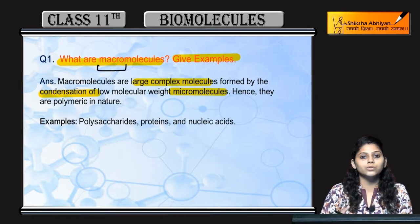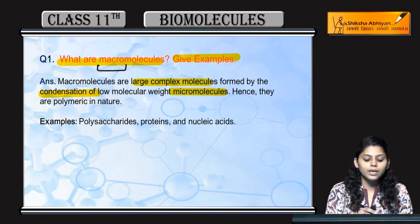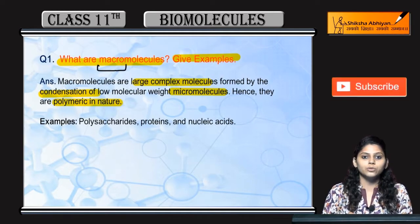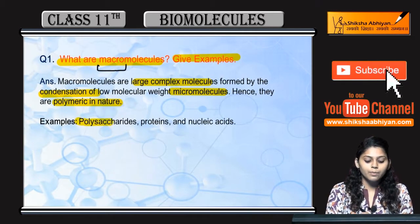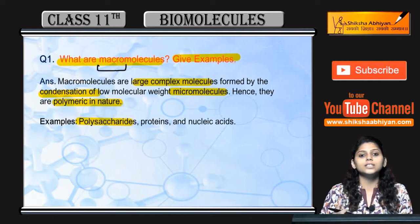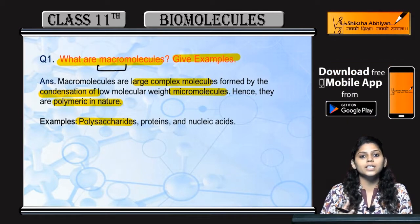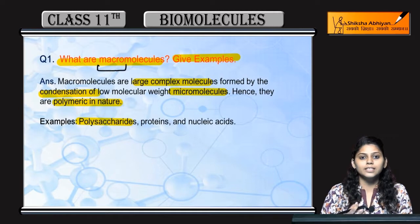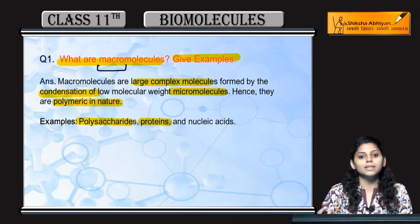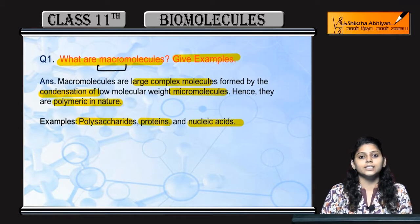Macromolecules are polymers of micromolecules. Examples are polysaccharides, which are formed from many monomeric units — many monosaccharides combine to form polysaccharides. Proteins are formed from many amino acids, and nucleic acids — these are the examples of macromolecules.